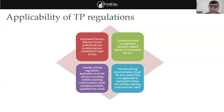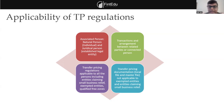Transfer pricing documentation — meaning local file and master file — is not applicable to exempted entities or those claiming small business relief. But for any transaction of any amount, you need to maintain minimum required documentation to justify the arm's length price. If you meet the specified threshold, you need to prepare a local file and master file. If not, sufficient minimum documentation is still required to justify the arm's length price.